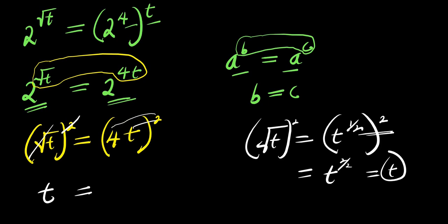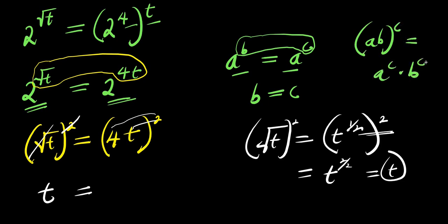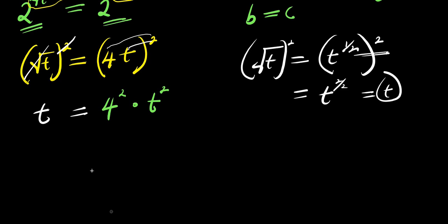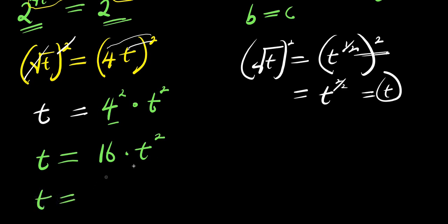On the right side, we distribute the power of 2 to each term inside the bracket. Using (a×b)^c = a^c × b^c, we get 4 squared times t squared, which is 16t². So we have t = 16t².